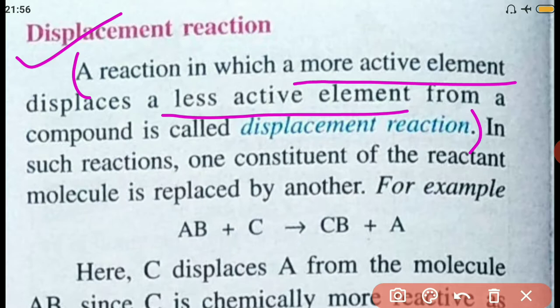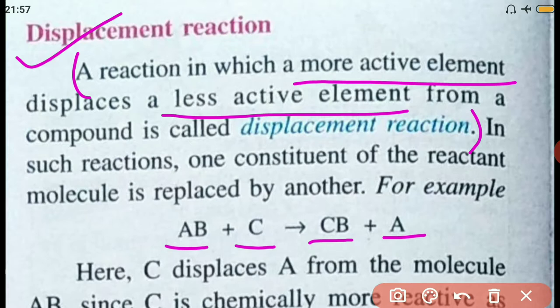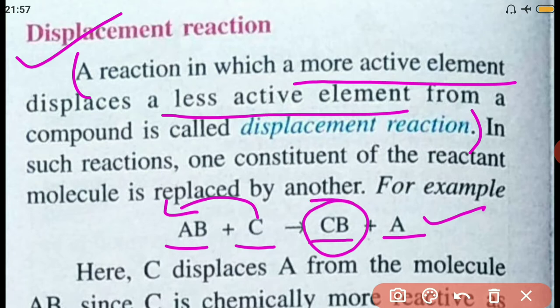For example, compound AB reacts with element C — a compound always reacts with an element. Here, C takes the place of A and A gets displaced. C takes B along with it, and a new compound CB is formed.